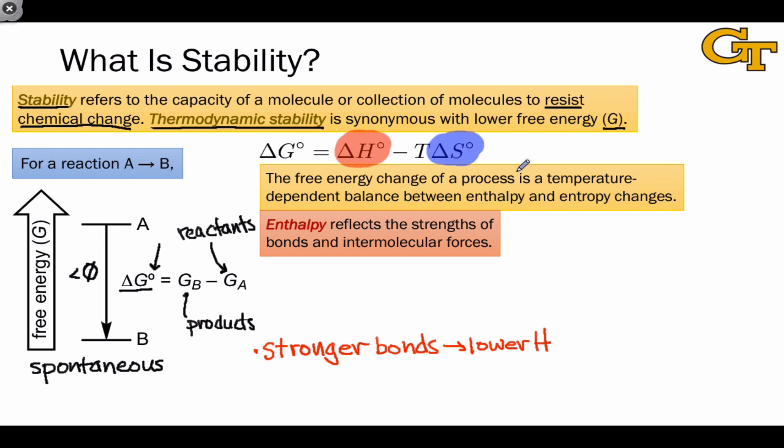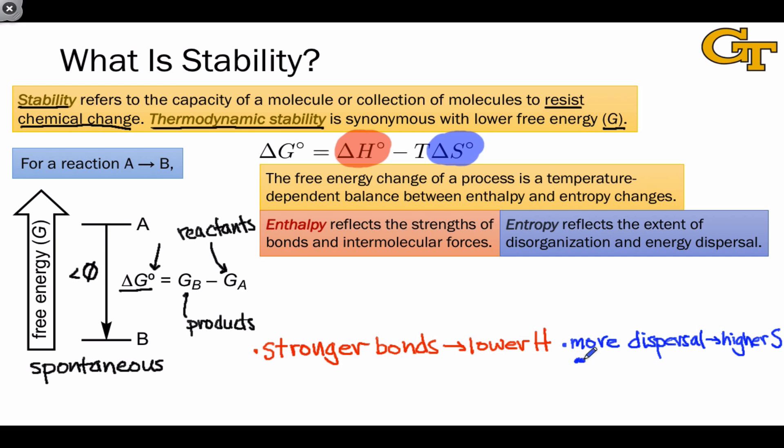Delta S is the change in a state function called entropy. Entropy reflects the extent of disorganization and energy dispersal within the system, where higher entropy tends to be associated with more dispersal of molecules or energy. It's intuitive to think about entropy in the context of phase changes, where perhaps we're going from an ordered solid to a much more disordered gas. We would expect the delta S for this process to be greater than zero.